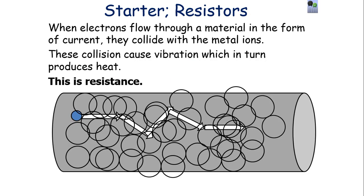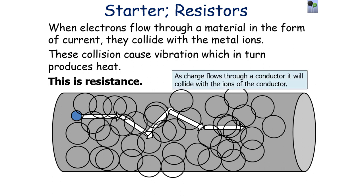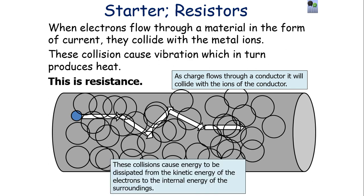Before we get into what a semiconductor is, we need to recap what we mean by resistance. When electrons flow through a material in the form of a current, they collide with the metal ions of the conductor they're travelling through. These collisions cause vibrations which produce heat — what we observe as resistance. As charge flows through a conductor, energy is dissipated from the kinetic energy store of the electrons to the internal energy store of the surroundings, which we would observe as heat.